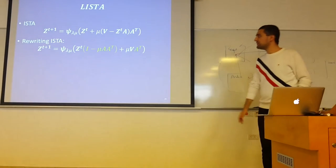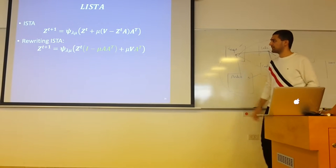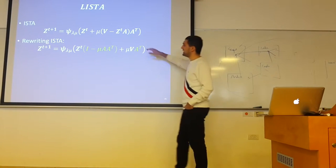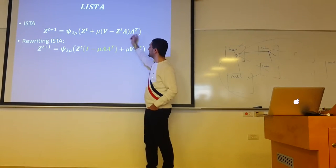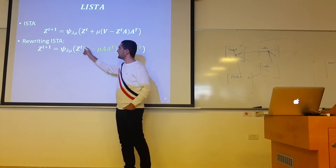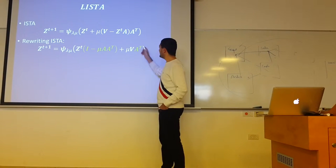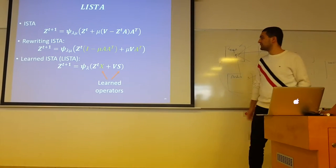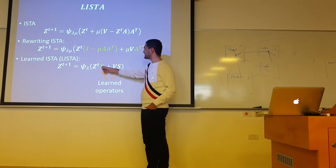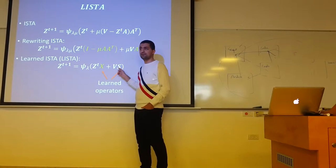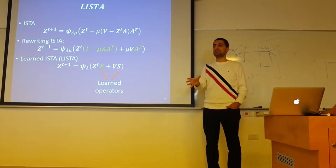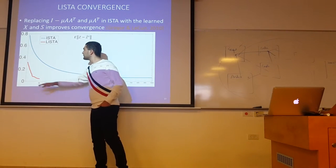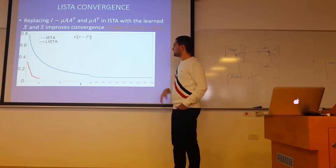One interesting strategy proposed to accelerate ISTA is the LISTA strategy — learned ISTA. If we take the ISTA iteration and look at the gradient step and rewrite it, we see a linear term multiplying our previous guess Z_t and a linear term multiplying the measurement. Gregor and LeCun in 2010 suggested replacing these two linear operations with two matrices W and S, and learning W and S to get the fastest convergence with a limited number of iterations.